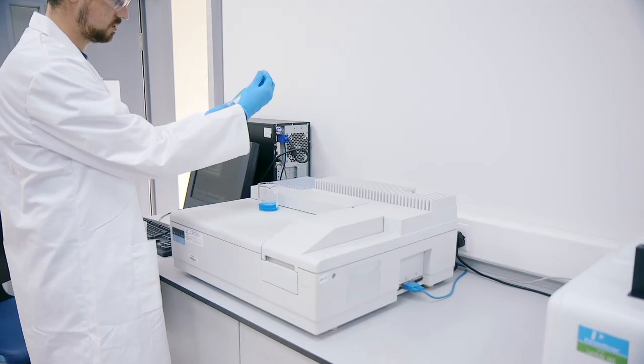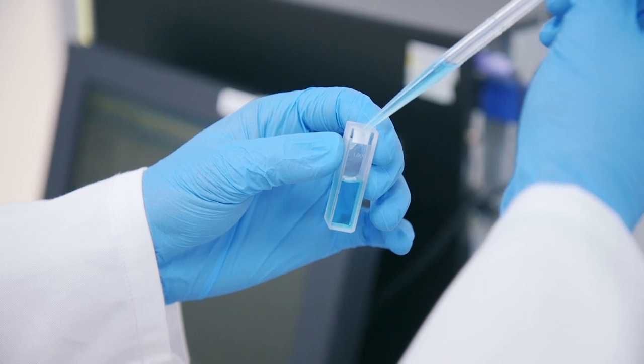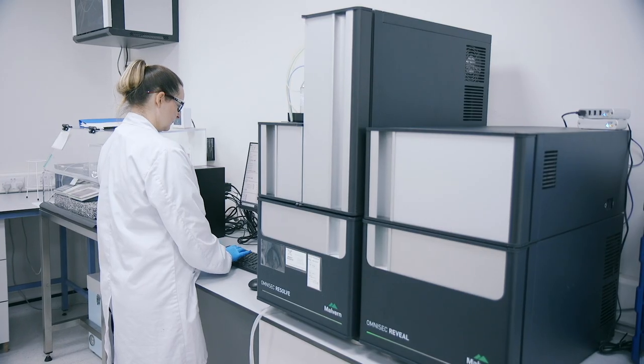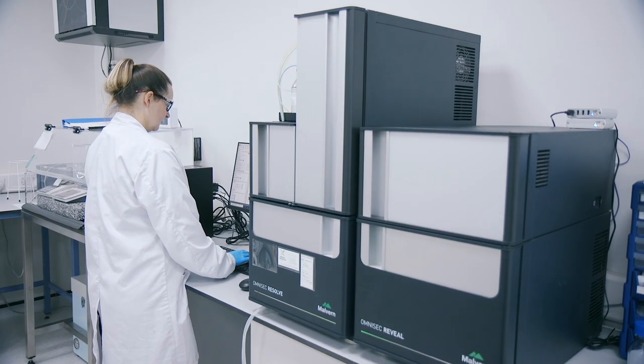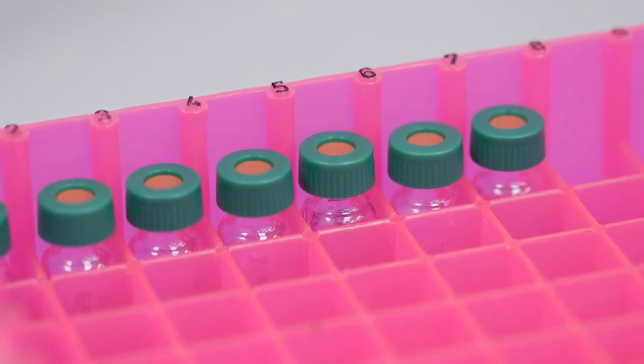Also here are our PerkinElmer UV-Vis spectrophotometer and the Malvern Panalytical Omnisec Reveal and Resolve. This is a size exclusion chromatography system with multiple detectors: UV, viscosity, RI, and light scattering, which are configured in series for optimum sensitivity.